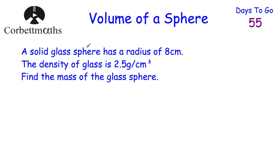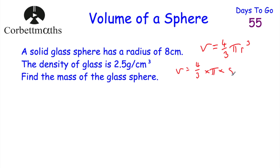Now we've got a question involving a solid glass sphere with a radius of 8 centimetres. The density of the glass is 2.5 grams per centimetre cubed, and we need to find the mass of the glass sphere. First, we find the volume: V = 4/3 × π × 8³. Typing this in gives 2,048/3 π, or approximately 2,144.66 centimetres cubed.